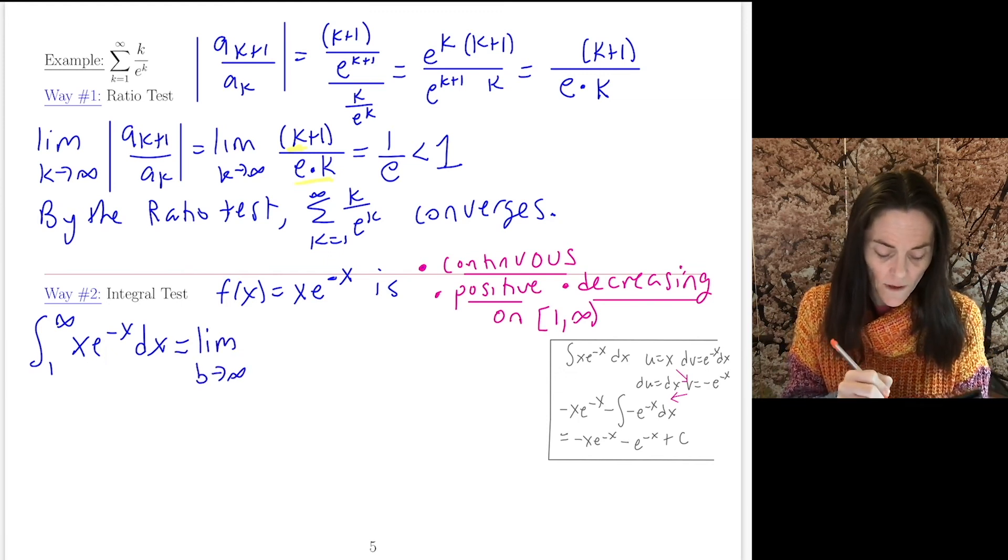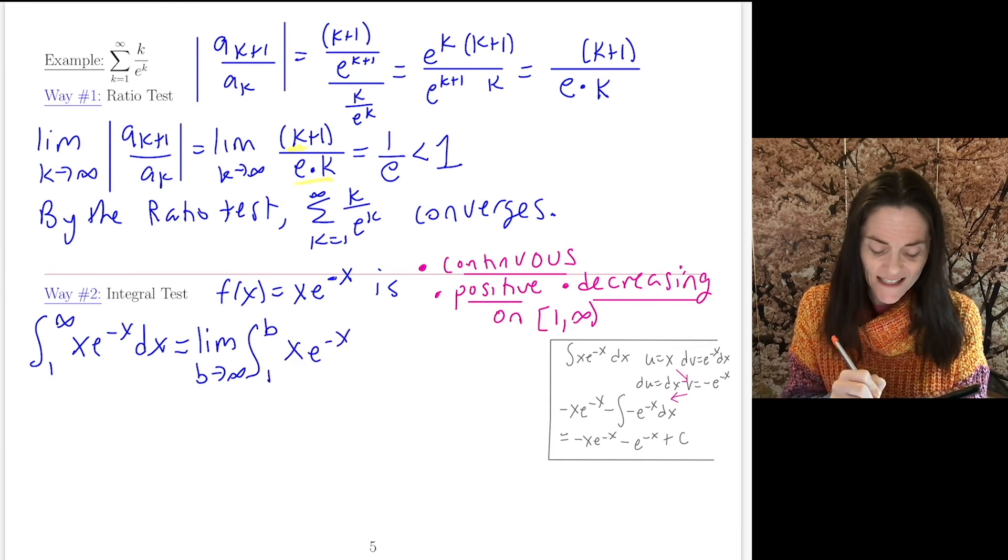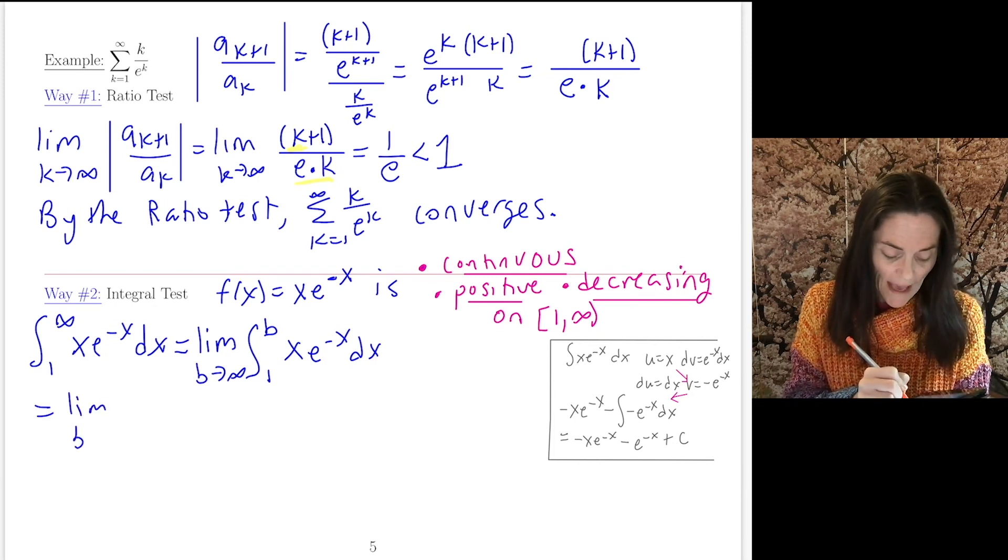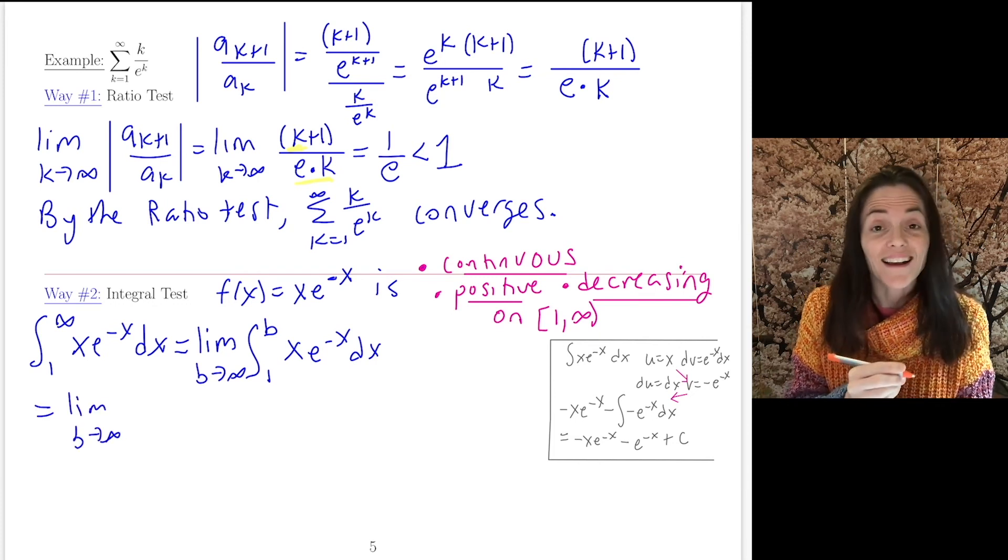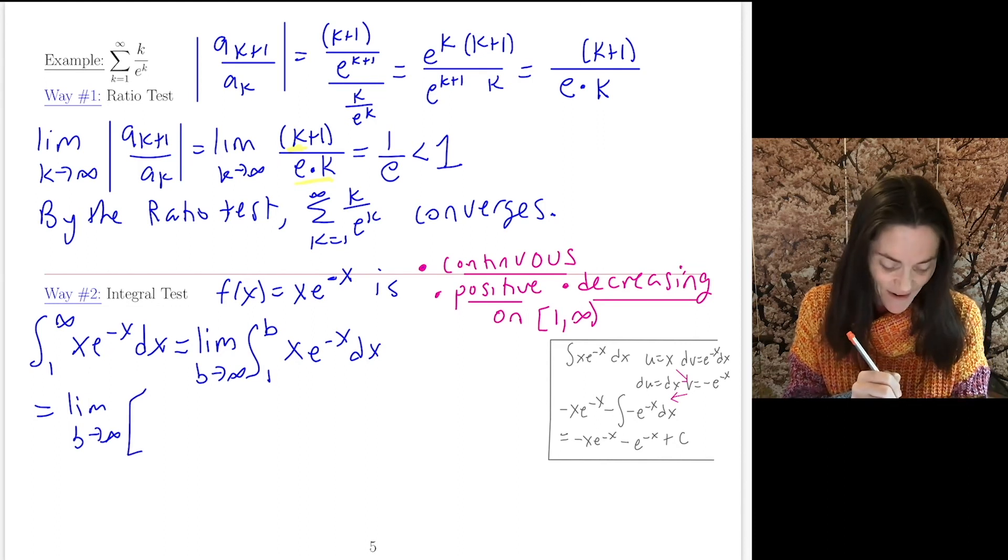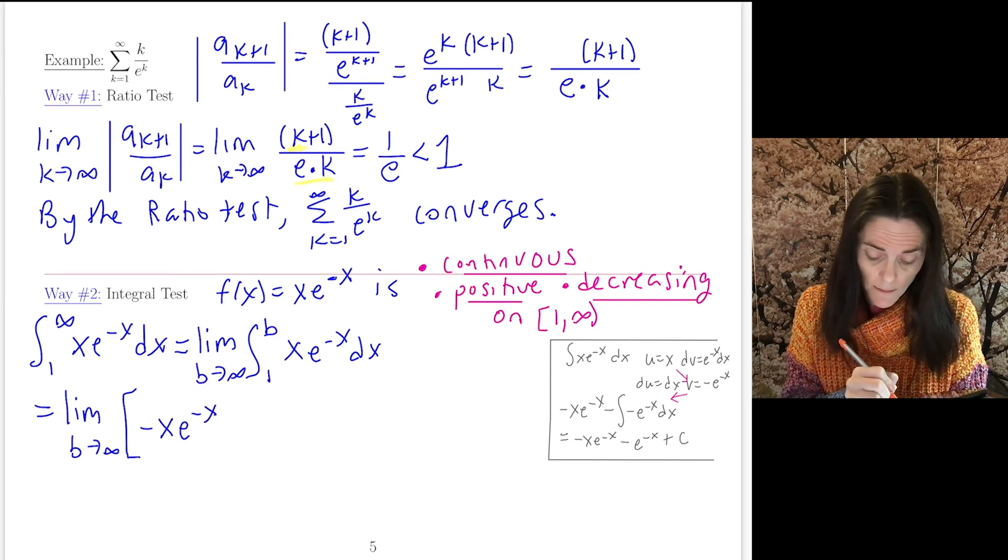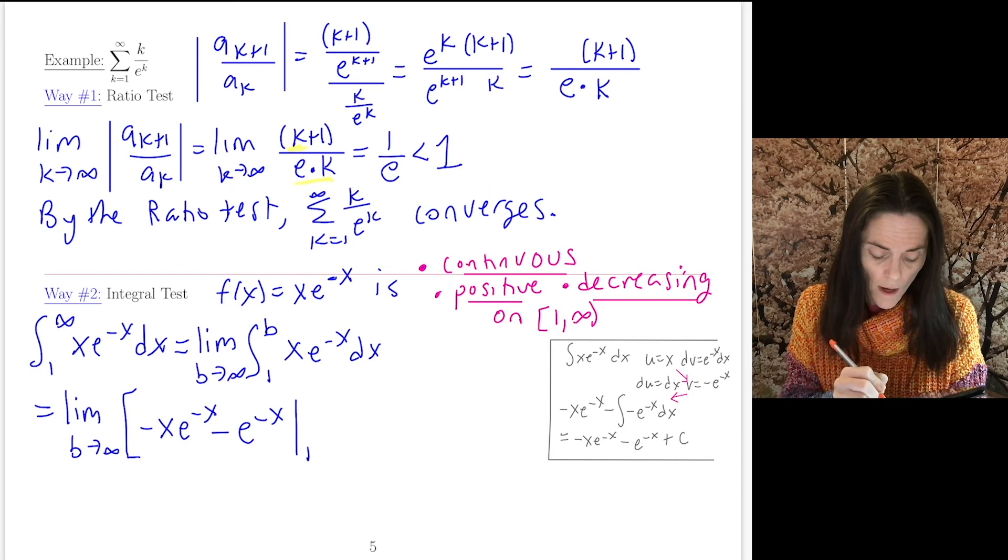And I will make it a little smaller. Now let's go back here. This is a limit as b goes to infinity, integral 1 to b of x·e^(-x) dx. The nice thing is, we have already found our capital F of x, our anti-derivative. It's here, -x·e^(-x) - e^(-x). And then we evaluate from 1 to b.